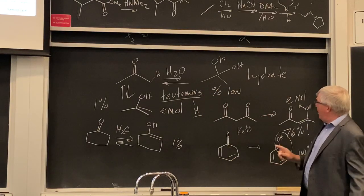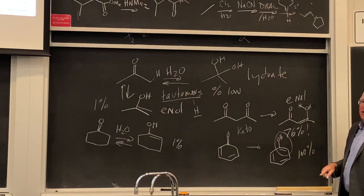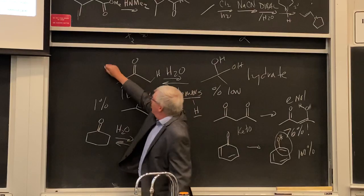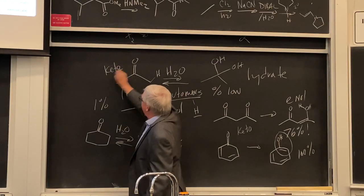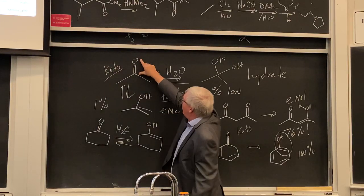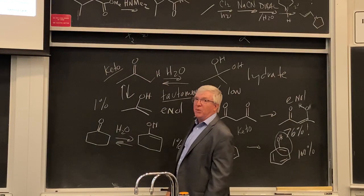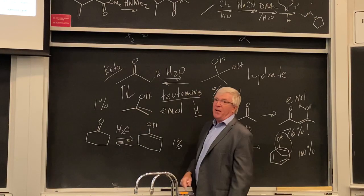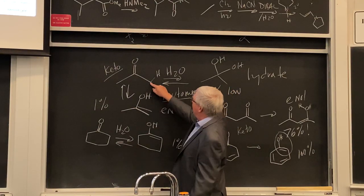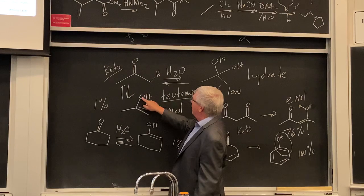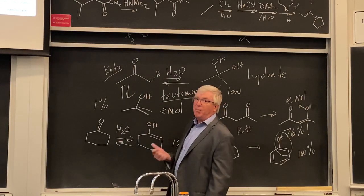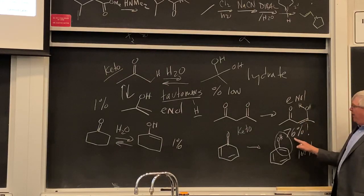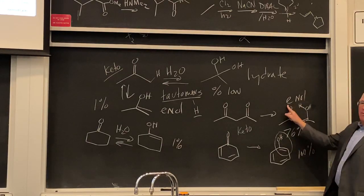Keto forms are often the most stable because the carbon-oxygen pi bond is more stable than the carbon-carbon pi bond, and carbon-hydrogen bonds are more stable than oxygen-hydrogen bonds. But resonance can make it more favorable to be in the enol form.